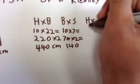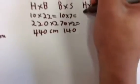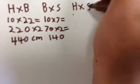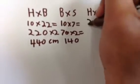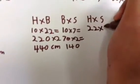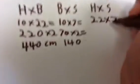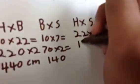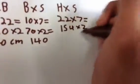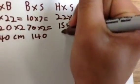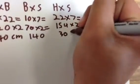And then height times side equals 22 times 7 equals 154, and then you times it by 2 equals 308.